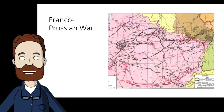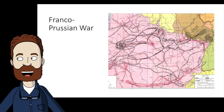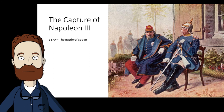From the beginning, Prussia had the advantage — a disciplined German army against a small and ill-organized French fighting force. Napoleon III himself was captured at the Battle of Sedan in 1870. After his capture, the conquest of Paris lay four months away, and then the war was over.